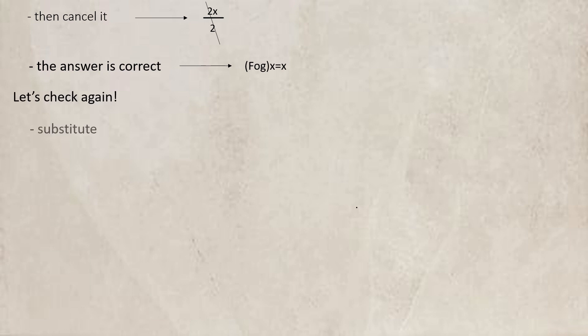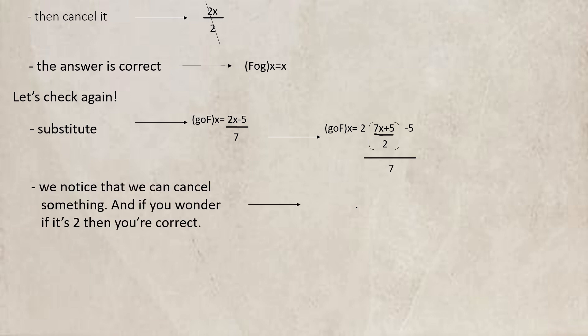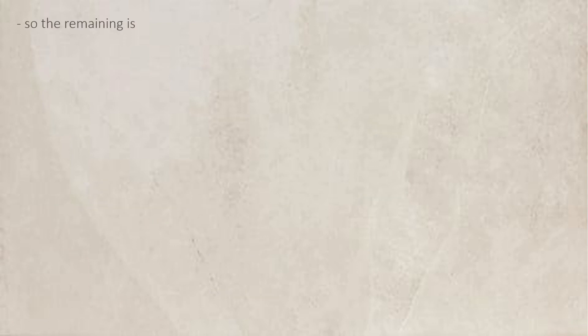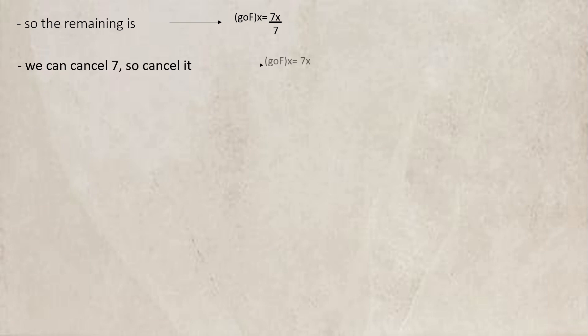Let's check again. g∘f(x) = (2·((7x+5)/2) - 5)/7. We can cancel 2, so the remaining is (7x + 5 - 5)/7. Cancel positive 5 and negative 5: g∘f(x) = 7x/7. Cancel 7, so the remaining is x. Our answer is correct.